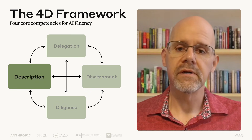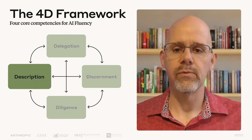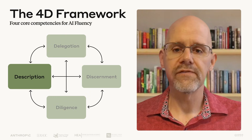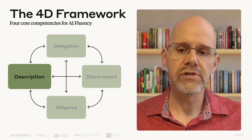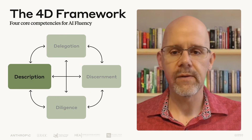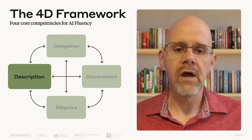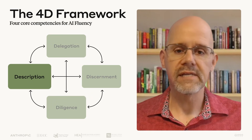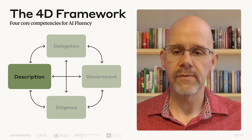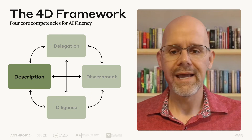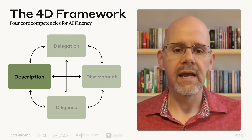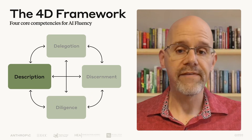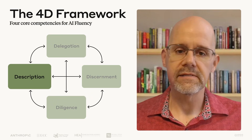Description addresses how we communicate with AI systems. Through clear articulation of what we want, how we want it approached, and what kind of interaction is most helpful to us — also known as product, process, and performance description — we guide AI to produce the outputs we need and become more effective collaborators and assistants.